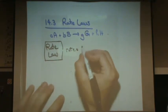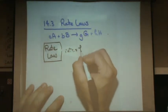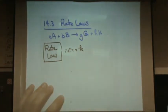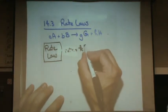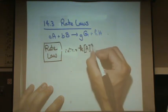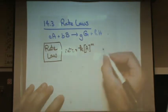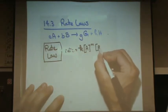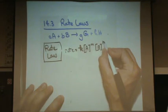It's lowercase k times the concentration of A raised to some power m, times the concentration of B raised to some power n. So rate = k[A]^m[B]^n. Let me tell you what all these unknown variables are.